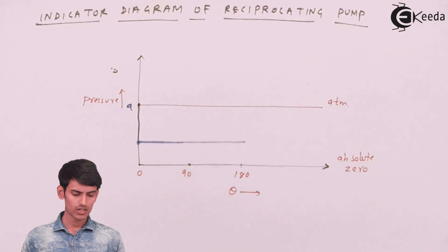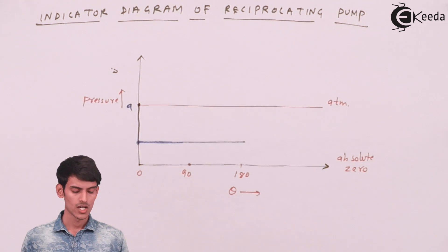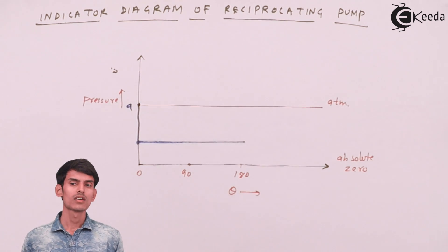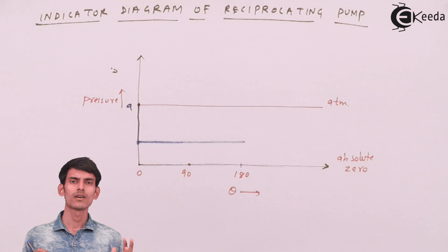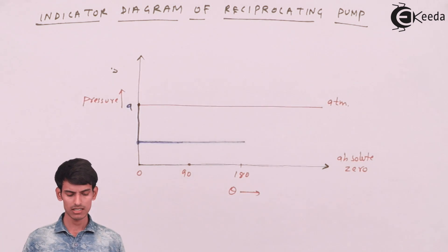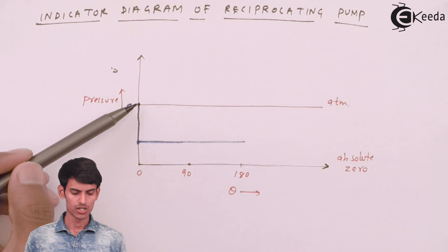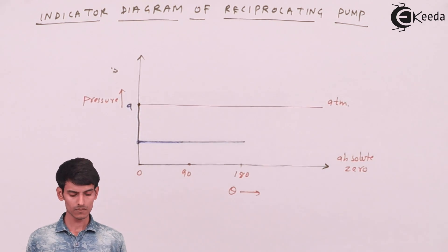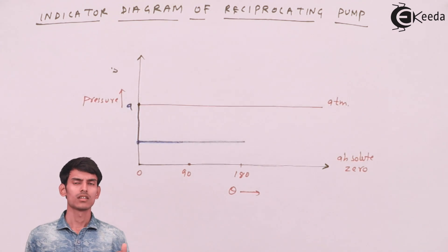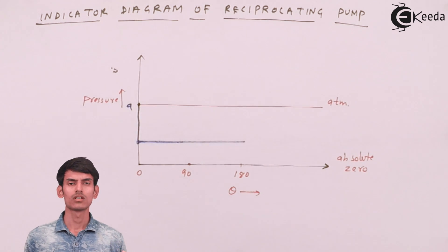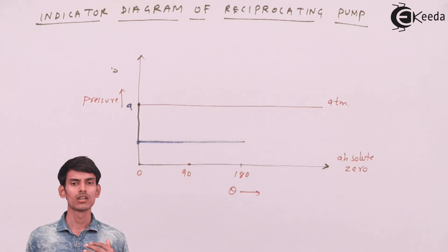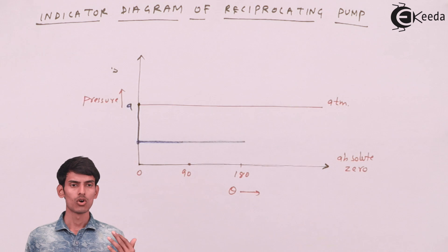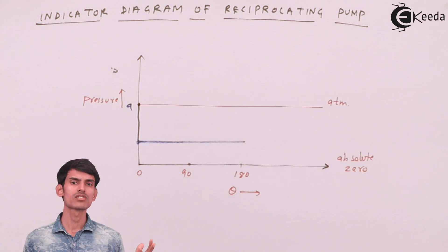Let's plot the graph of pressure versus theta — the indicator diagram. Before the pump works, everything is at atmospheric pressure. Once the pump starts and suction begins, I'll assume the pressure instantaneously drops, creating a partial vacuum. The vacuum head equals HS, the suction head — only when the vacuum pressure head equals HS will the water be pulled up.